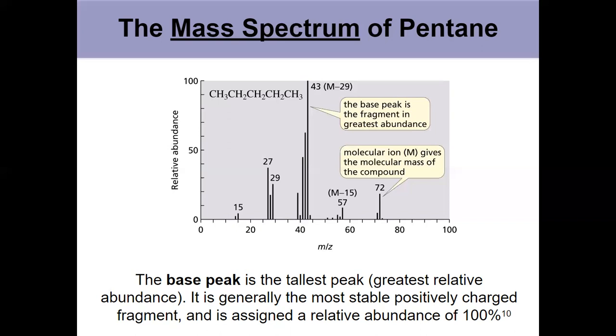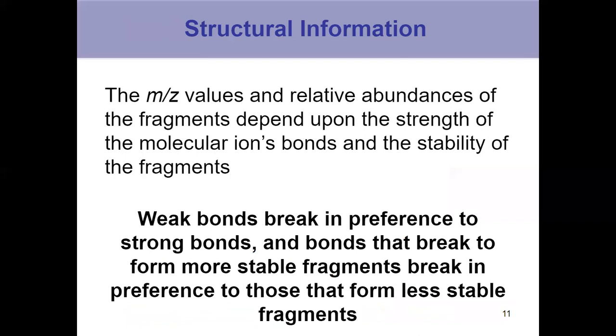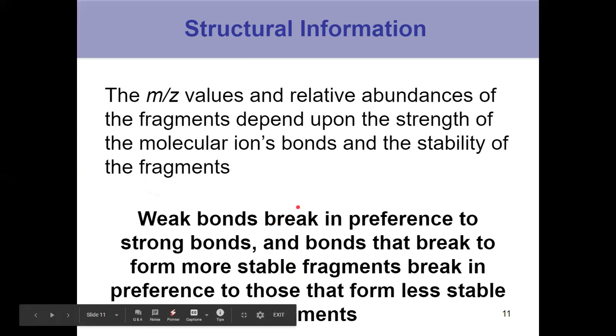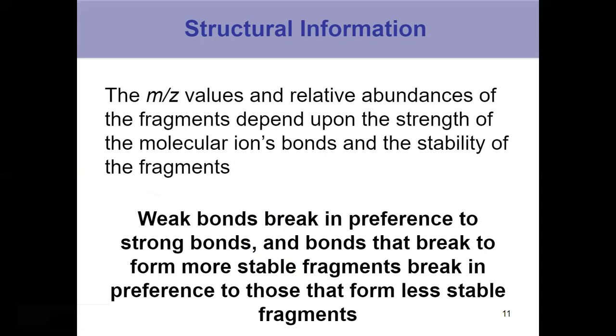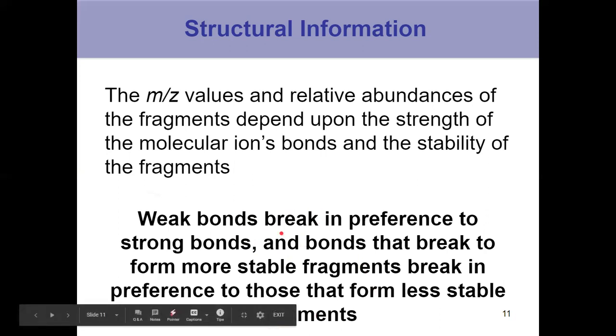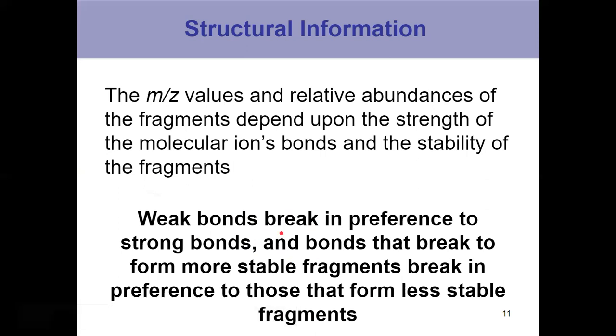Notice as well that the molecular ion is shown in brackets as a radical cation, because we don't know what bond actually broke to give us the electron. Everything else below that is a fragment. But the way things fragment gives you information about the structure, which is the neat part about mass spec.